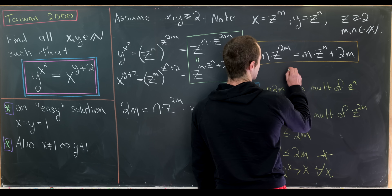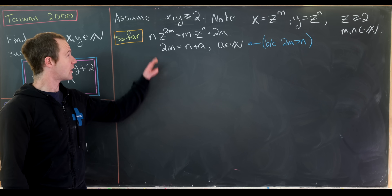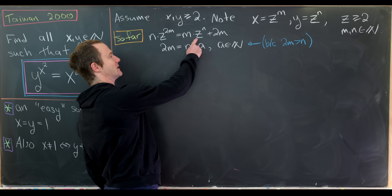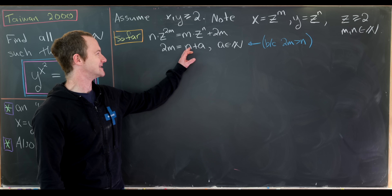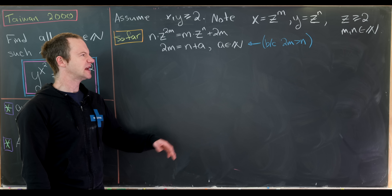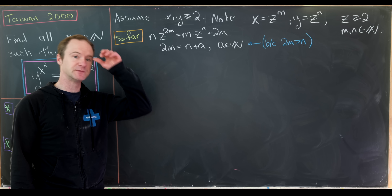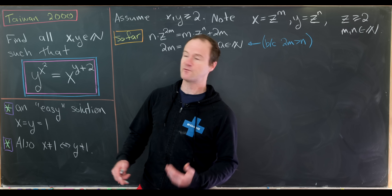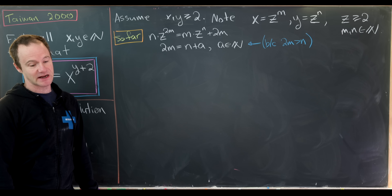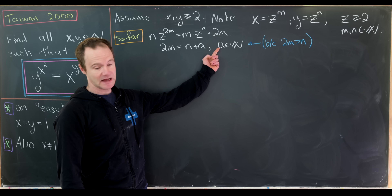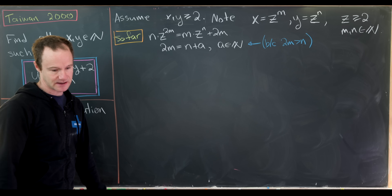With n less than 2m established, we write 2m as n plus a where a is a natural number. We'll use a trick from the Art of Problem Solving forums — pretty easy to find since those forums are indexed by country and year. The idea is to focus on the number a and figure out what a and z are first, then use that to determine m and n.